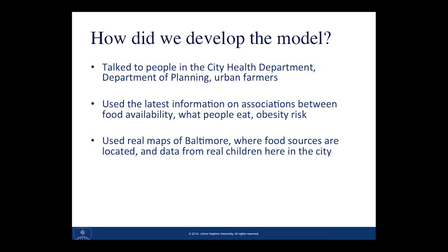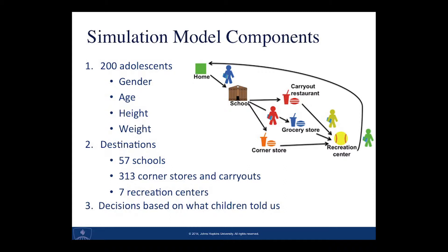The model includes actual data from 200 adolescents age 10 to 14 from Baltimore City. It includes information about their gender, their age, their height, and their weight. It includes actual geo-located destinations, including 57 schools, 313 corner stores and carryouts, and seven recreation centers. And it includes algorithms that help us describe the decisions that children make based on what these children actually told us about their usage of food sources and the foods they select within these stores.